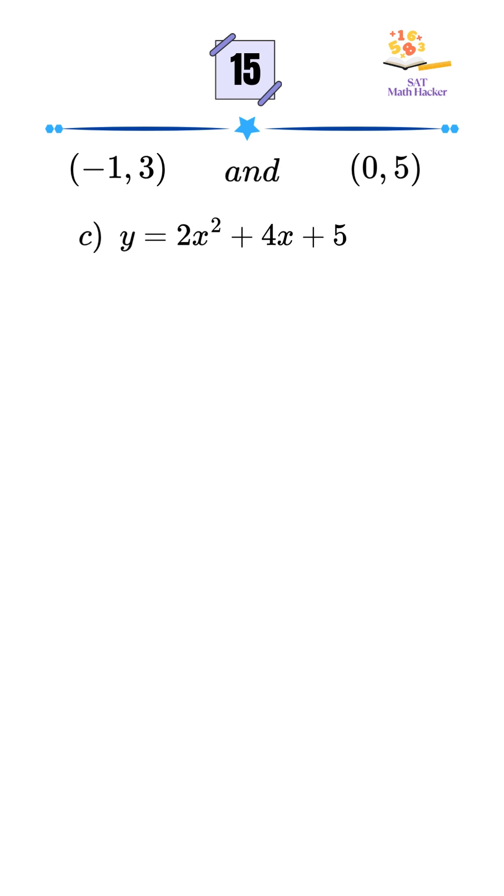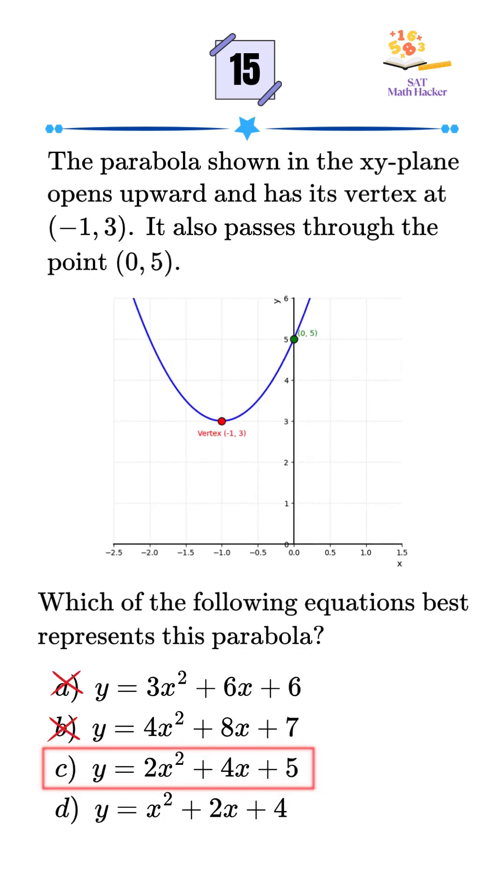Option C next. Plug in x equals negative 1, y comes out to be 3. Now plug in x equals 0, we get y equals 5. Boom. Both points satisfy option C. That's our correct answer.